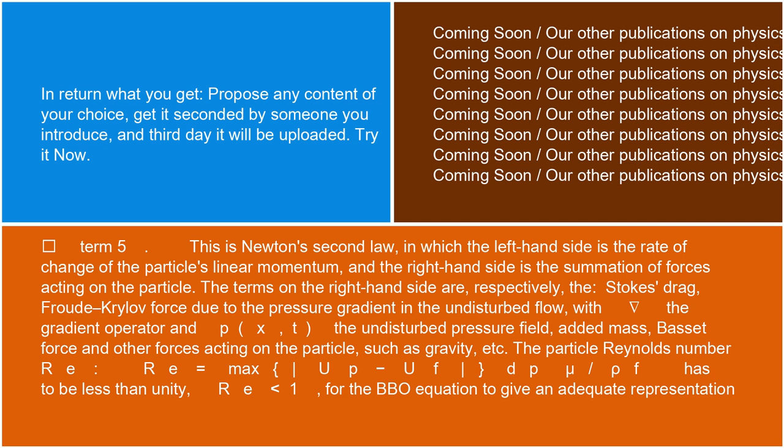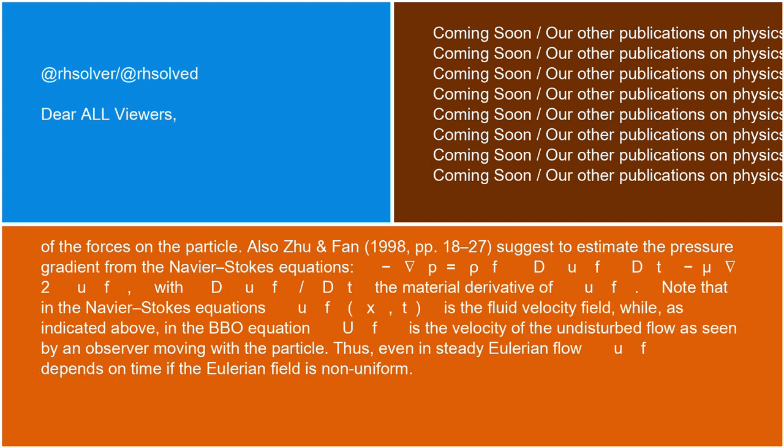The particle Reynolds number Re = max(|u_p - u_f| d_p / (μ/ρ_f)) has to be less than unity (Re < 1) for the BBO equation to give an adequate representation of the forces on the particle.